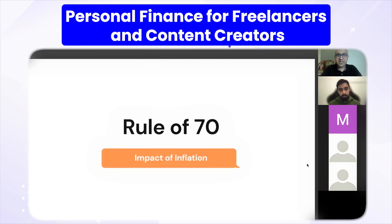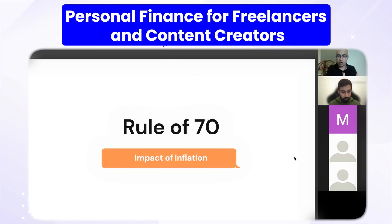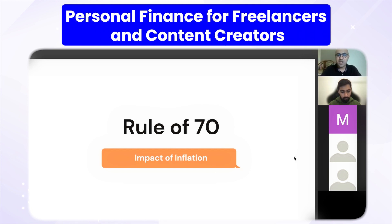The rule of 70: if inflation is 7%, in how many years will your savings kept in a normal bank account or cash in a locker have its purchasing power reduce to half? You take 70 divided by 7, you get 10. So in 10 years, your money's purchasing power will reduce to half. This is the rule of 70 to calculate the impact of inflation.